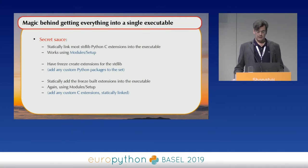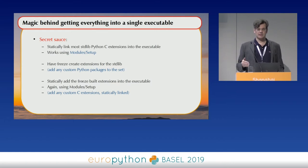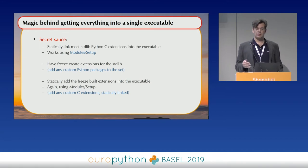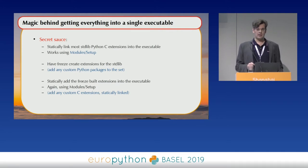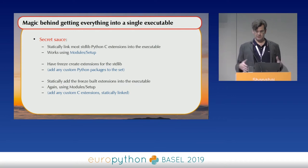Essentially, I wanted to take the standard library, which is mostly Python modules but also a few C modules. You had to do two things: first, get all the C modules — the extensions built in the standard build process of Python — to not be compiled as shared libraries, but instead as static libraries, so you can link them directly into the interpreter. And then the second step was taking all the Python modules in the standard library, converting them to C extensions as well, and linking them statically — so you get everything into a single file.